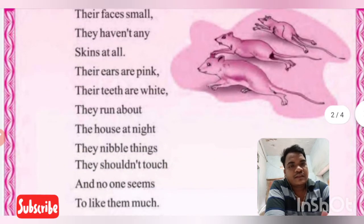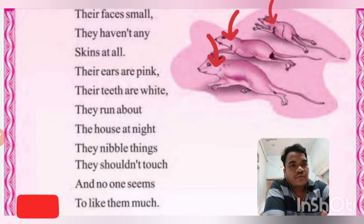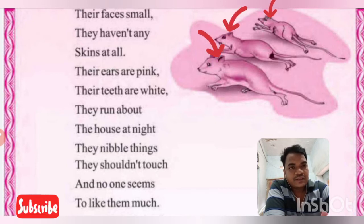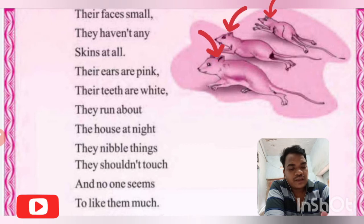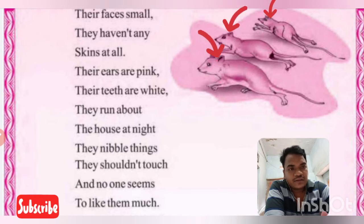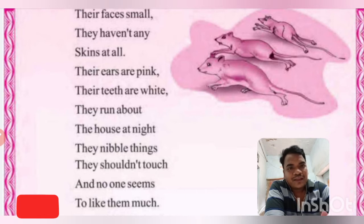Their ears are pink, their teeth are white. Look at this picture of the ears of the mice. What is the color of their ears? The color of their ears is pink. What is the color of their teeth? The color of their teeth is white.